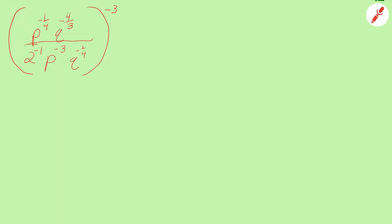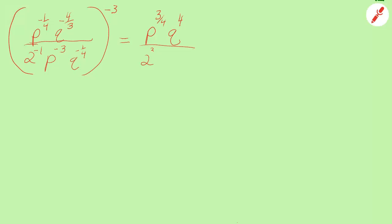It's important to say that the negative 3 is also a power. Negative 1/4 times negative 3 is positive 3/4, so in the numerator I'll have p to the positive 3/4. Negative 4/3 times negative 3 is going to be positive 4, so I'll have q to the 4th power. Negative 1 times negative 3 is positive 3, so I'll have 2 to the 3rd power in the denominator.